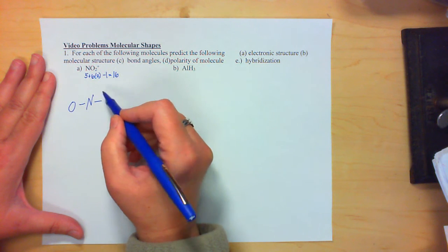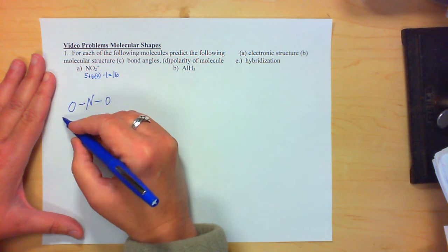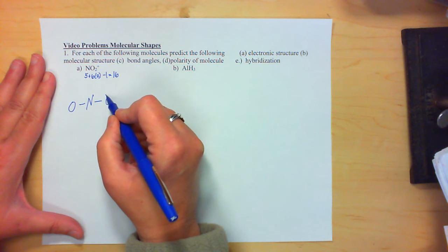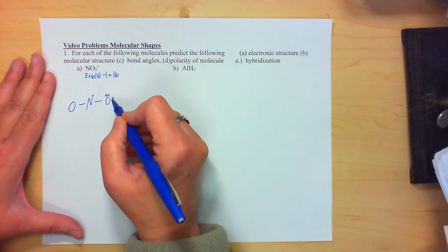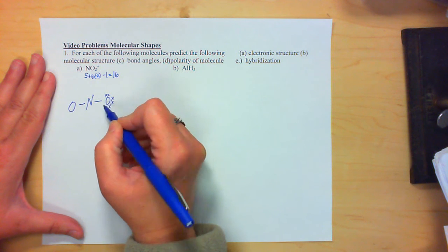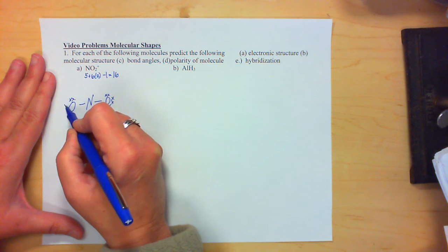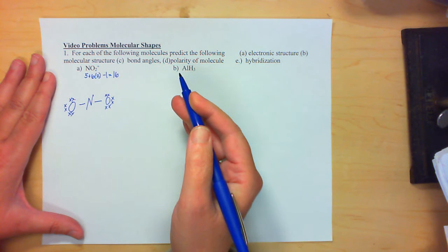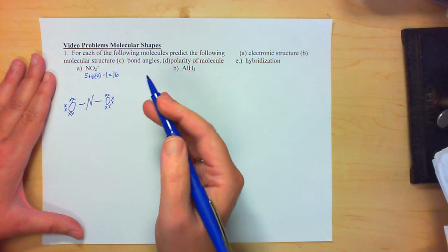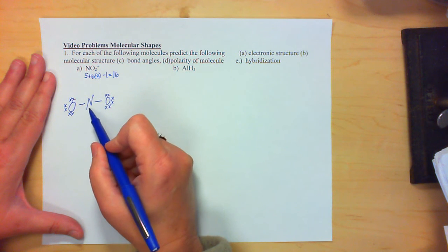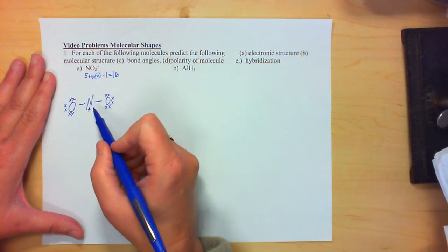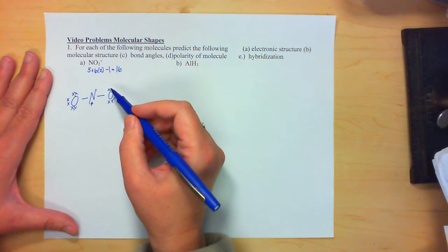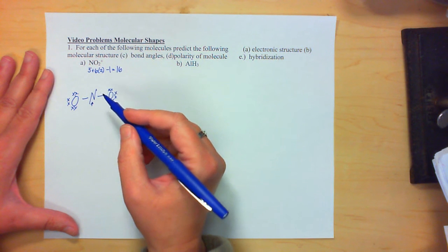So we have two, four electrons. We're going to fill the outermost electrons next. So that's 6, 8, 10, 12, 14, 16. So we've put in all 16 electrons. The problem is, nitrogen only has 4 electrons around it here, and we need a total of 8.